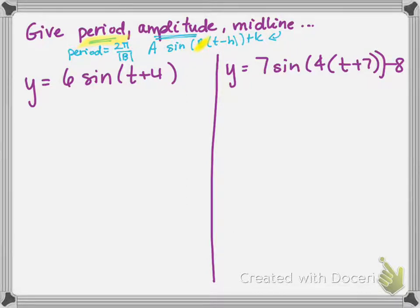So for this first one, I don't have anything added at the end, so there's no K value. So that's going to keep my midline at y equals 0, like the normal sine and cosine graphs have. The 6 out front is going to make my amplitude a value of 6, so it's going to get vertically stretched by a factor of 6.